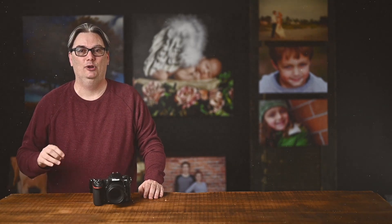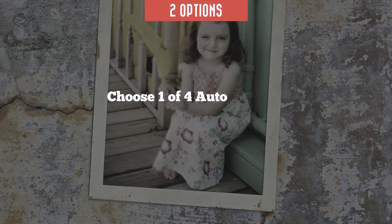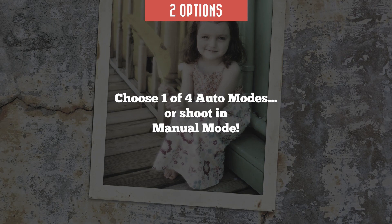When it comes to capturing a photo you have two options. You can either choose one of four auto modes and your camera will set the ISO, aperture, and/or the shutter speed to get a proper exposure — which you learned how to do in previous tutorials — or you can set your camera in manual mode and manually set each of the three camera settings.